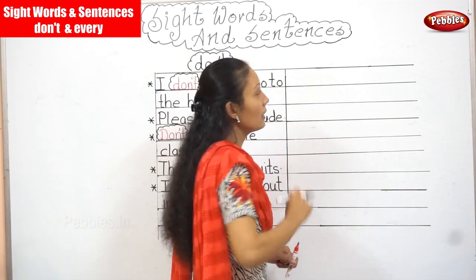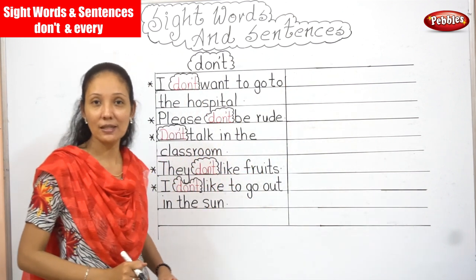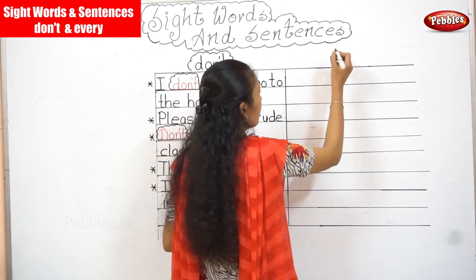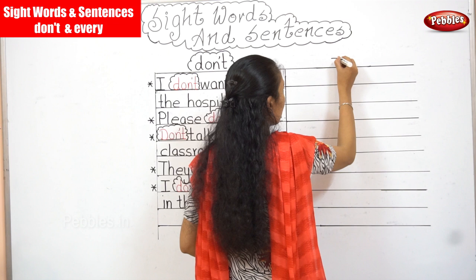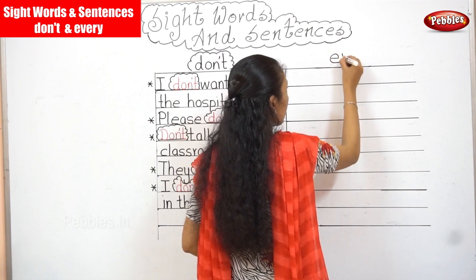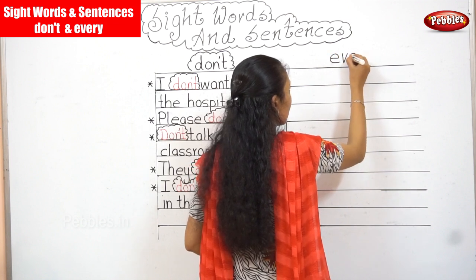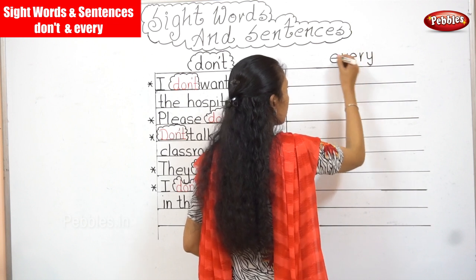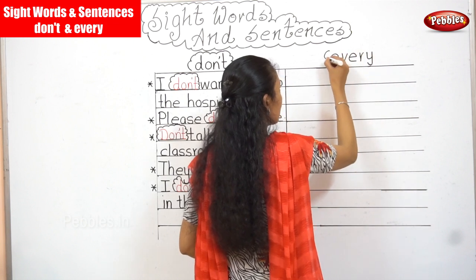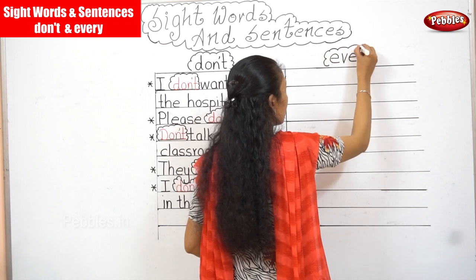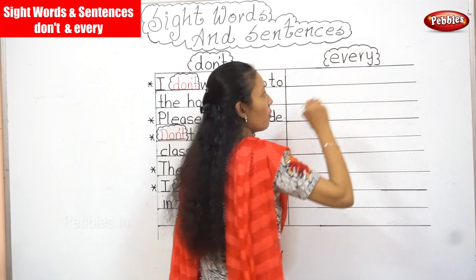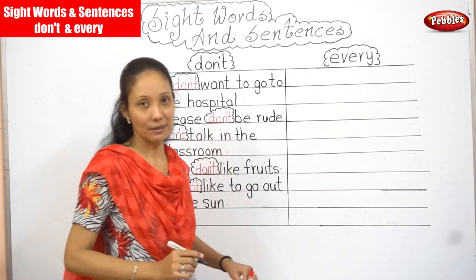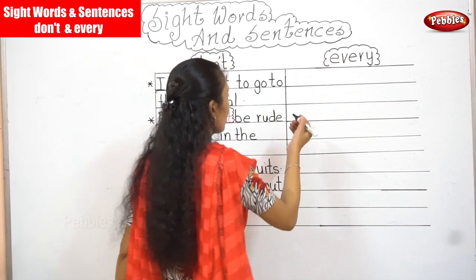Now we finish with D. We will do some sentences with E. We will do it with the word — can you tell me what word this is? Every! What's the word? Every. Now we are going to learn some sentences with 'every'.